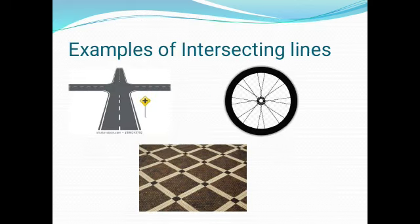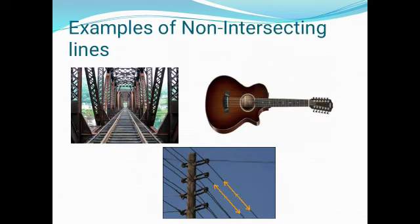Examples of Intersecting Lines are squares on a road, wheels in a vehicle, and tiles. Examples of Non-Intersecting Lines are railway tracks, strings of a guitar, and electric wires.